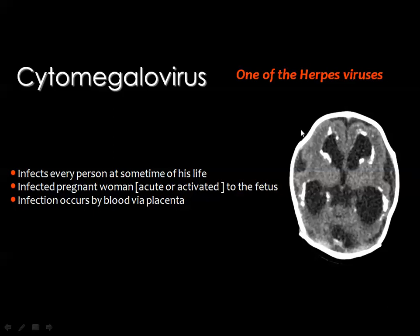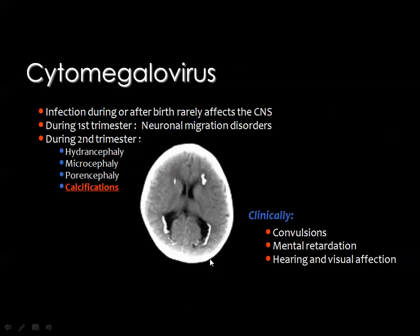Cytomegalovirus is one of the herpes viruses. It infects virtually every person at some time in life, and an infected pregnant woman may transmit it to the fetus. Once infection occurs via bloodstream through the placenta, it results in multiple periventricular calcifications. In most cases, this calcium is intimately related to the wall of the ventricle, occurring in the subependimal area. This CT scan of a CMV case shows evident periventricular subependimal calcium.